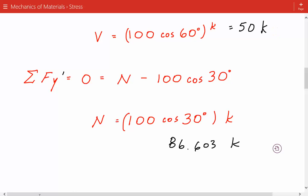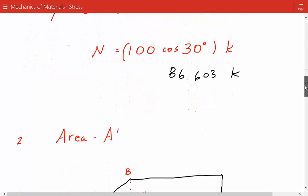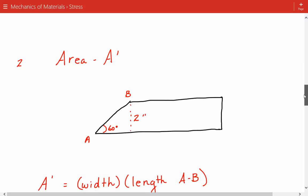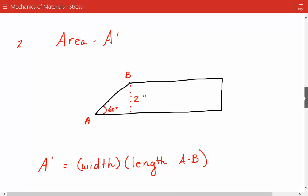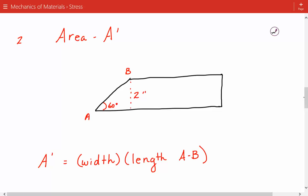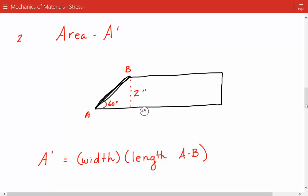Now that we've calculated the forces acting on the plane, we have to calculate the area over which these forces are acting over. So here's our plate again and the incline. And the area over which it's acting on is this area along this plane. So the area is equal to the width of the plate times the length of this incline AB.